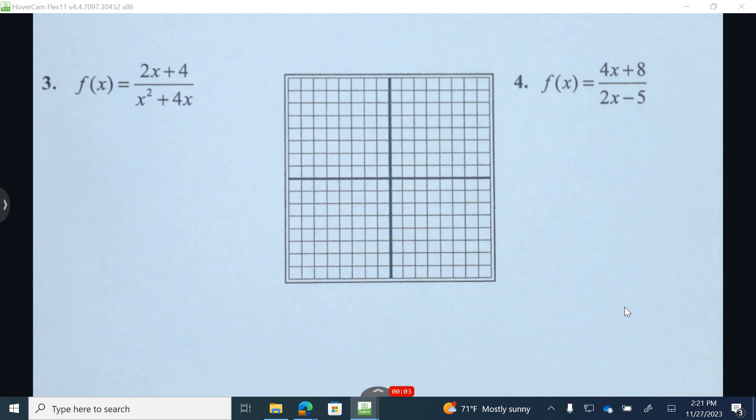Okay, without using a graphing calculator, we're going to complete number three. We're going to identify the vertical, the horizontal if it exists, the intercepts, and we'll use additional points that we calculate to create the graph. Again, this is no calculator.